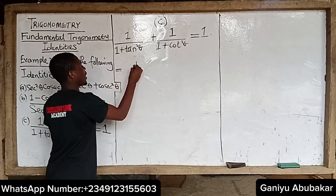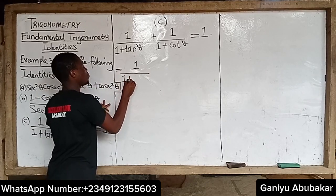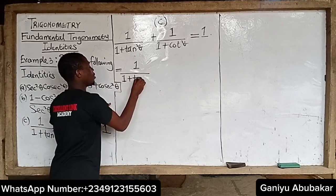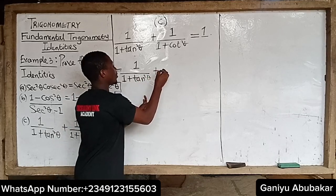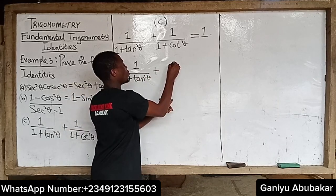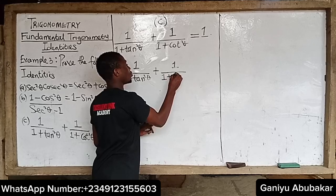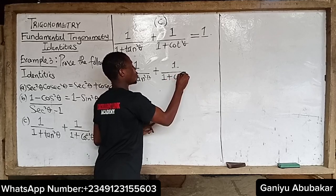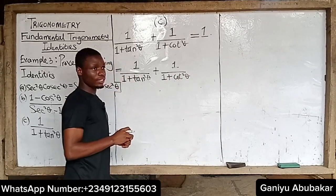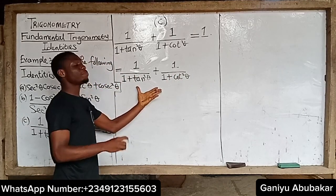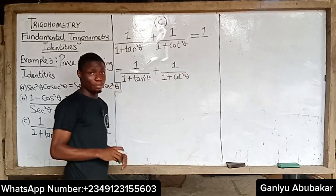We have: one over one plus tan squared theta, plus one over one plus cot squared theta. How do you prove this is equal to one? Let's get this done.